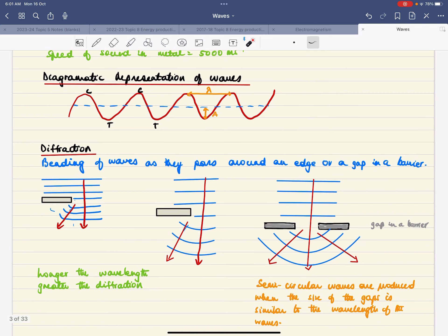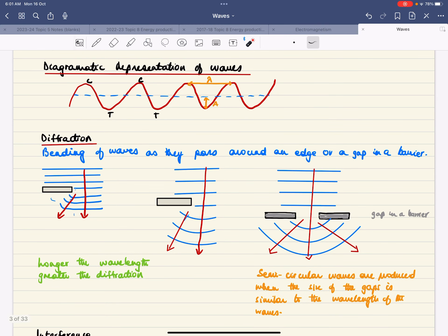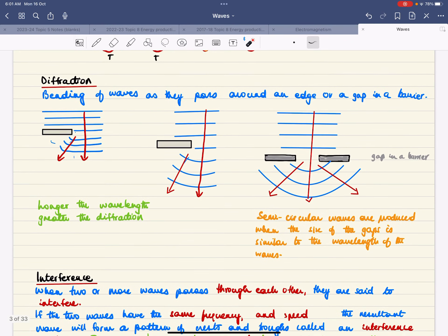When waves go through a gap or the edge of a barrier, they bend or they diffract. And the amount of bending increases when the waves are bigger. But when the wavelength of the waves is the same as the gap, you're going to end up with semicircular waves.